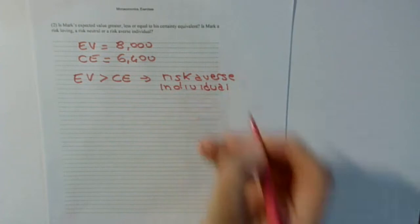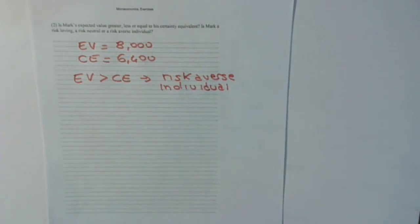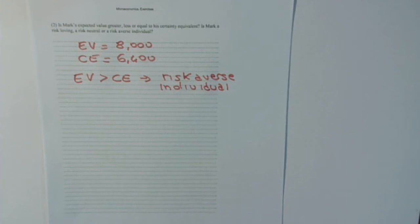We could have known Mark is risk-averse even before computing anything, because we can see it from the utility function: 3 times x to the power of 1/2, which is a power less than 1. This is typical of risk-averse preferences.